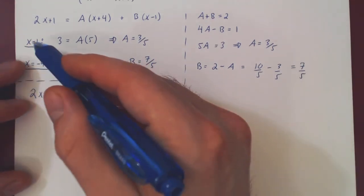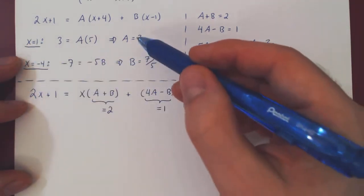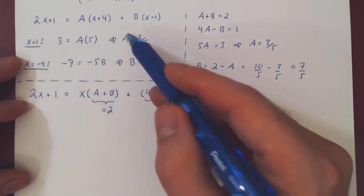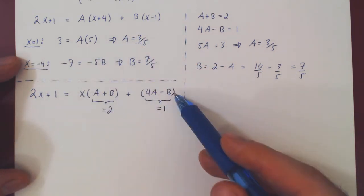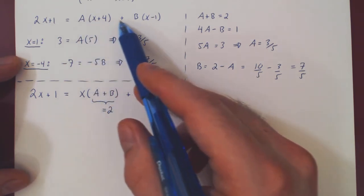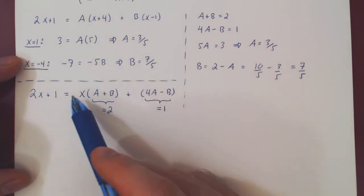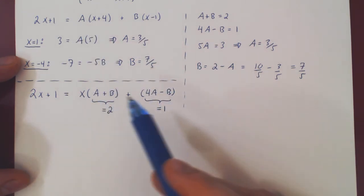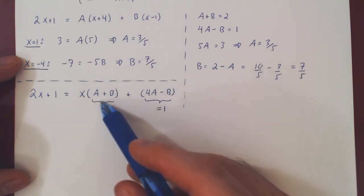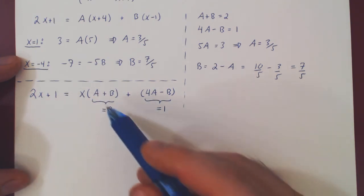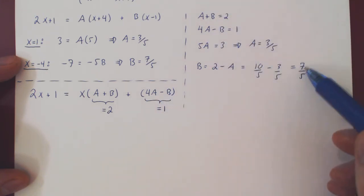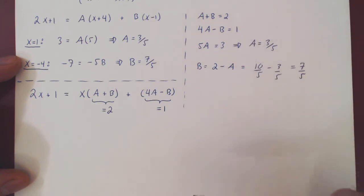Always use the first method when possible — it's the simplest. If it ever fails to return all the coefficients, fall back on the second method: rewrite the polynomial with unknown coefficients in canonical form, and since we have an equality between two polynomials, every coefficient must match — constant terms equal constant terms, multiples of x equal multiples of x — providing equations to solve for each coefficient by combining them appropriately.